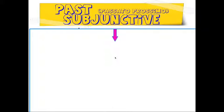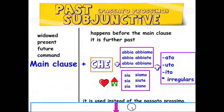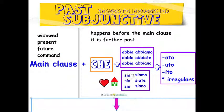However, that particular combination is taken, so how can you make this subjunctive? All you do is make your helping verbs subjunctive, and then you add -ato, -uto, -ito, or any irregular. For essere: sia, sia, sia, siamo, siete, siano.